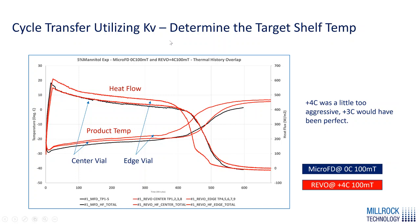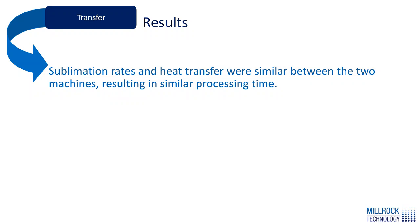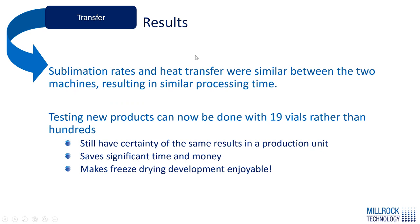This is significant because it means we can take the protocol developed in the laboratory and transfer it into production and get the same results. We determined the end of primary drying using the capacitance manometer versus the Pirani, and primary drying times were within minutes of each other between the two systems. The sublimation rates and heat transfer were similar between the two machines when we changed the shelf temperature, resulting in similar processing times. Testing new products can now be done with anywhere between 3 and 37 vials, and we can use that information for transfer.